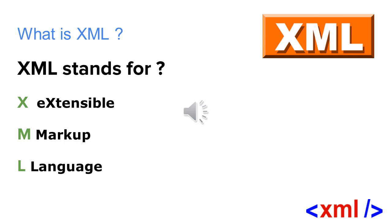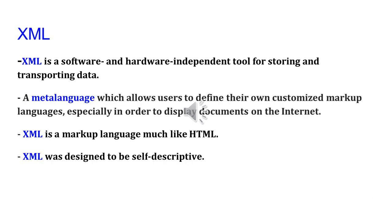XML stands for X — Extensible, M — Markup, and L — Language. XML is a software and hardware independent tool for storing and transporting data. It is a meta-language which allows users to define their own customized markup languages, especially to display documents on the internet. XML is a markup language much like HTML, and it was designed to be self-descriptive.